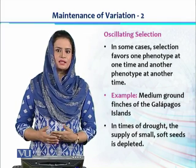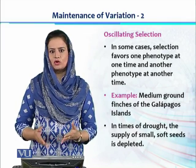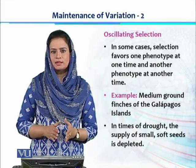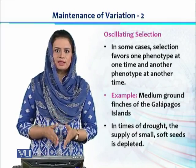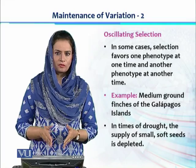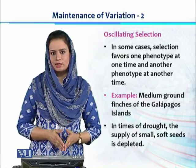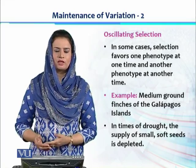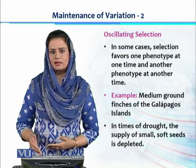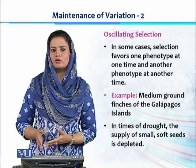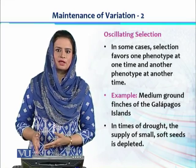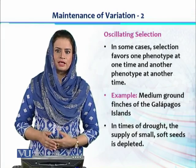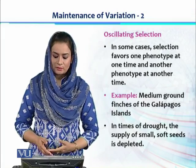As its name shows, oscillating selection oscillates its favor. At one time it may favor one allele of a trait in a population, but at another time it would oscillate and start favoring the alternative allele in the same population, but in different times.